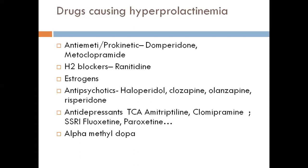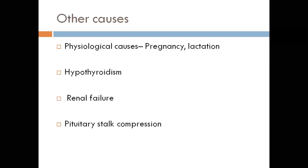Antipsychotics such as haloperidol, clozapine, olanzapine, and risperidone can cause hyperprolactinemia. The mechanism is clear: these are D2 receptor blockers. Dopamine normally inhibits prolactin secretion from the pituitary; blocking the D2 dopamine receptor interrupts this inhibitory control, resulting in hyperprolactinemia. Antidepressants — tricyclic antidepressants like amitriptyline, often given for neuropathic pain — are also causes of hyperprolactinemia.